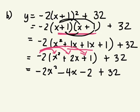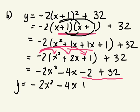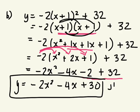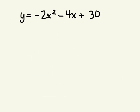Can you simplify this? Yes. Like terms. y equals negative 2x squared minus 4x plus 30. That's it for standard form. This is in standard form. Look here please. So you just put the equation into standard form.